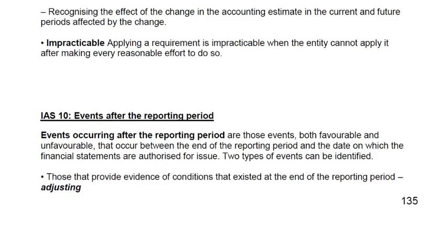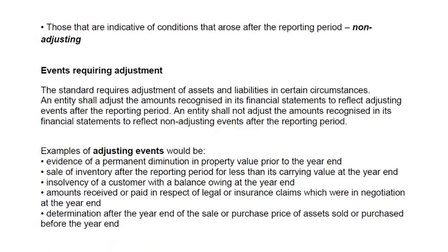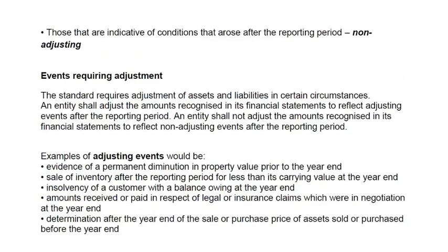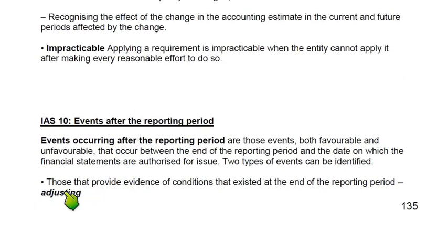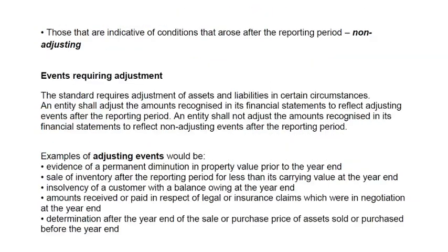Events after the reporting period start from the end of the year — 31st December 2018 in my example — and run to the date when accounts are finally issued to shareholders. These events, lying in these three months, can be divided into two categories: one is an adjusting event and another is a non-adjusting event.